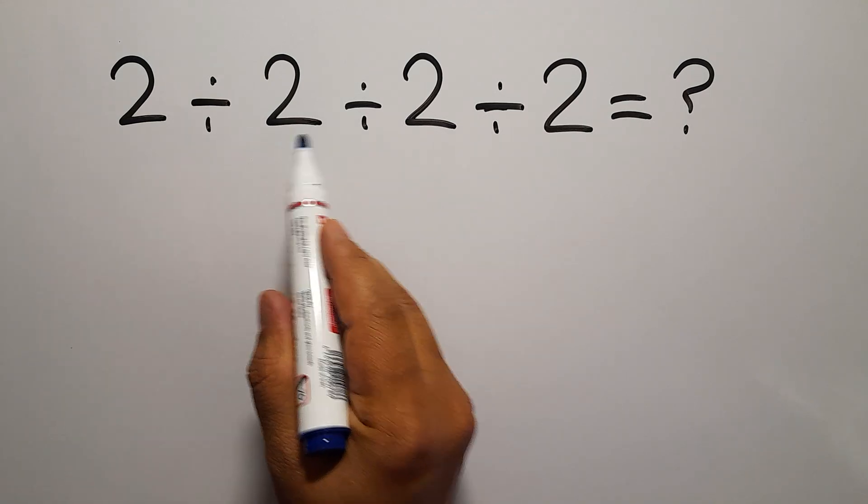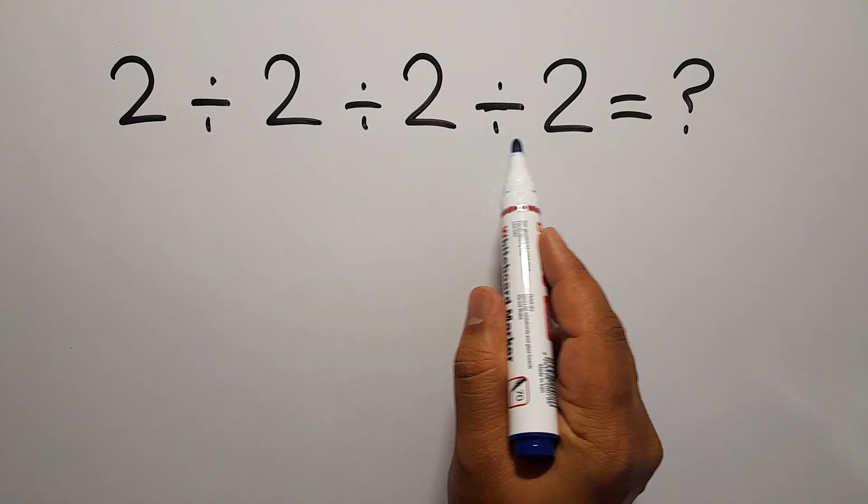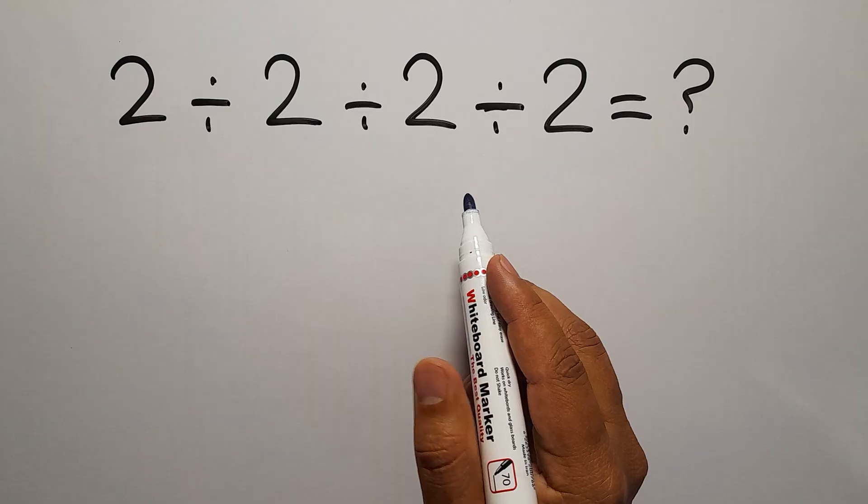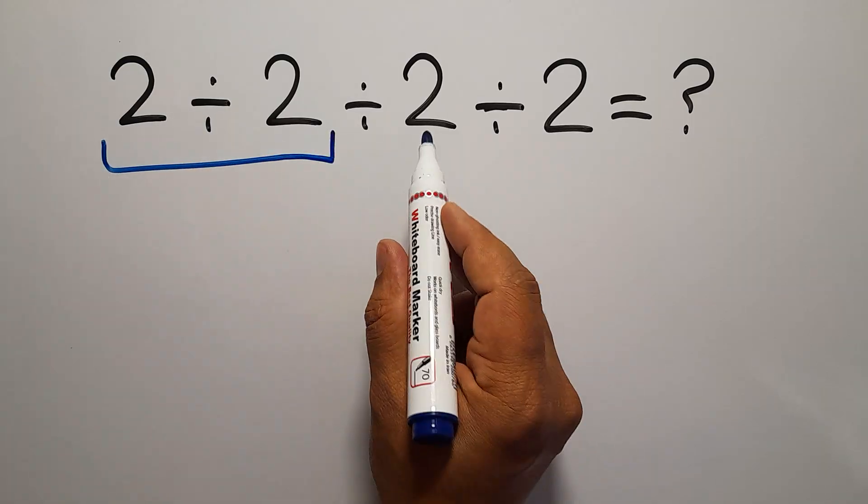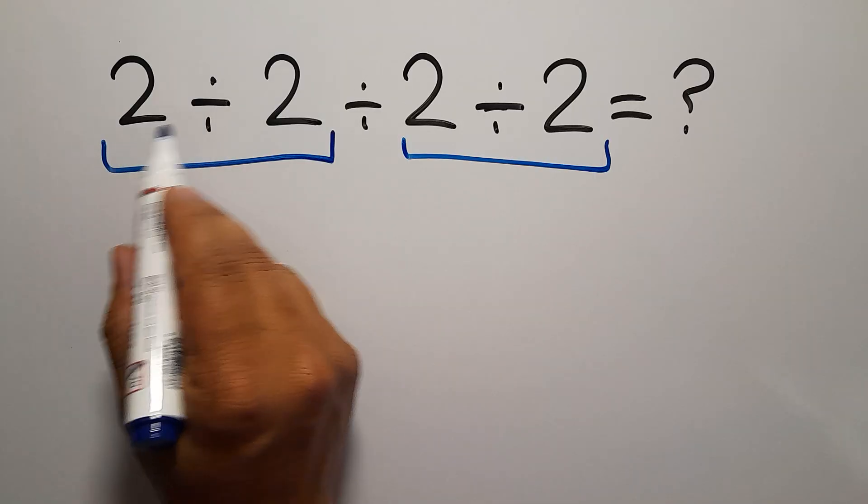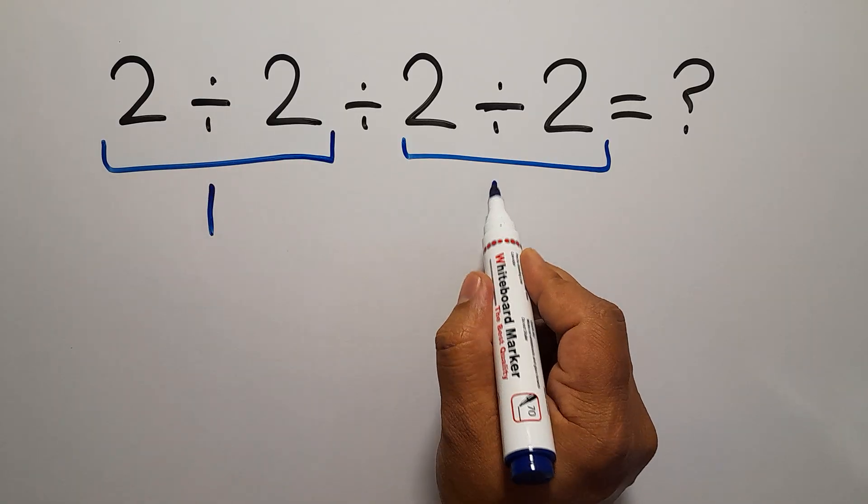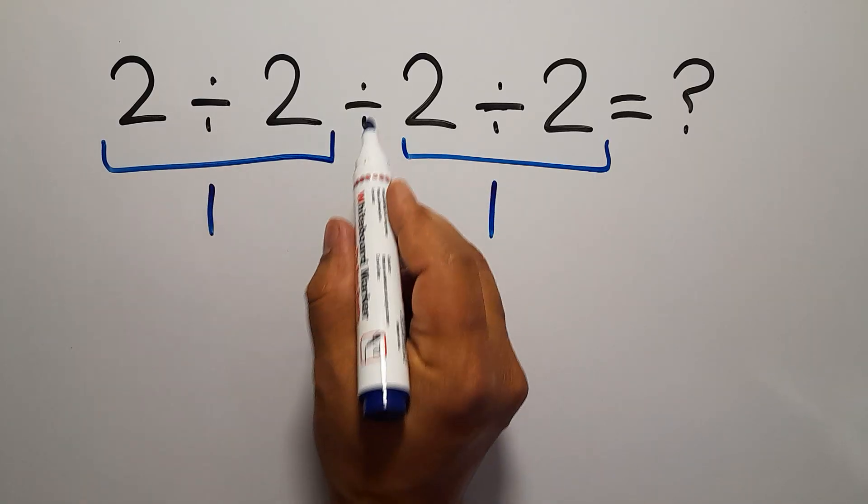2 divided by 2 divided by 2 and again divided by 2. We have 2 divided by 2 and again 2 divided by 2. 2 divided by 2 is just 1, so we have 1 divided by 1 which equals 1.